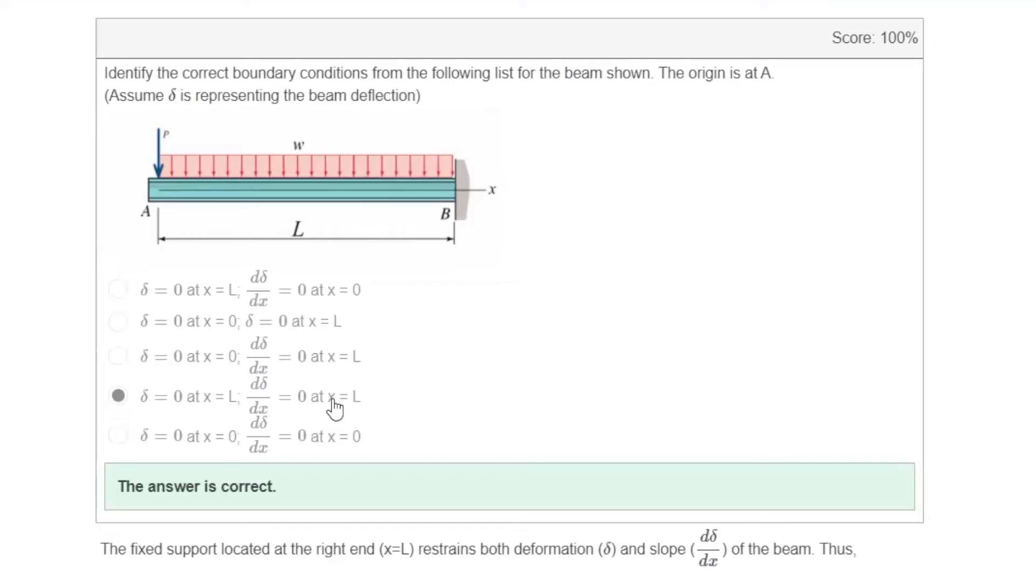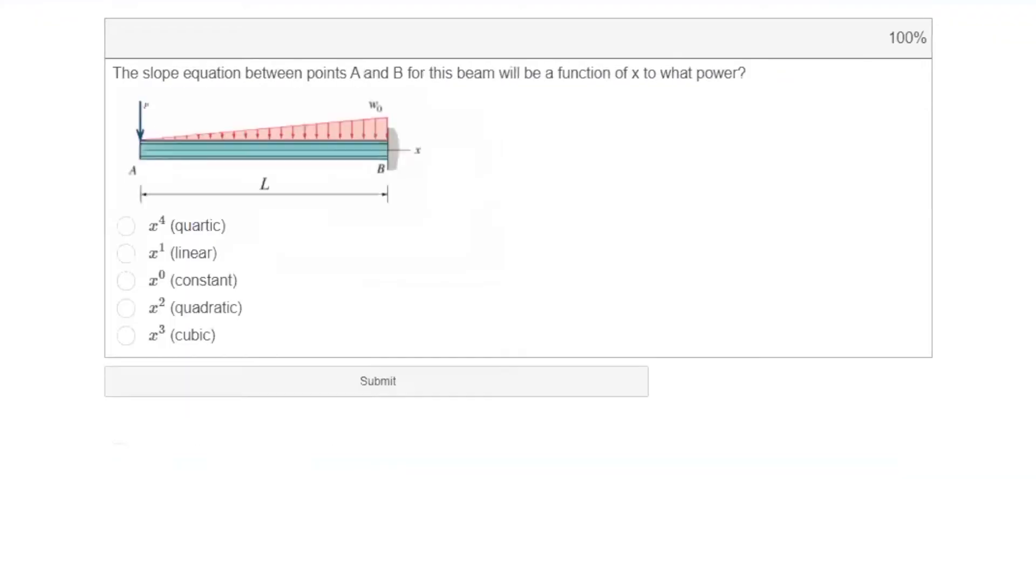So this question could be repeated in different scenarios. We need to review those concepts in order to make sure that we understand the concept of boundary conditions. Okay, that was one concept that I wanted to review. The other one is somehow related to that. Another beam kind of similar to the previous case. This is subjected to two different loads. And we want to see what would be the expected power of x if someone is about to determine slope of this beam between point A and B.